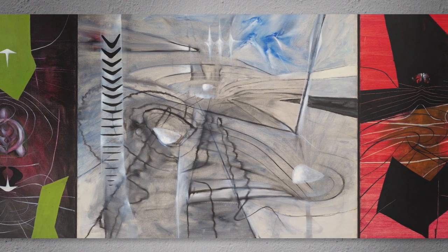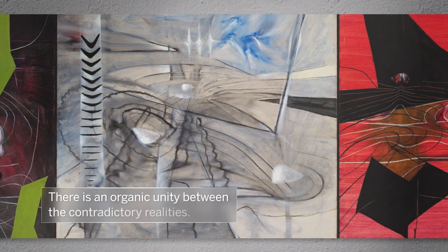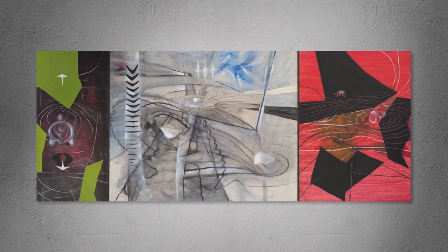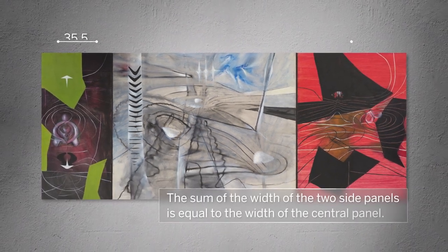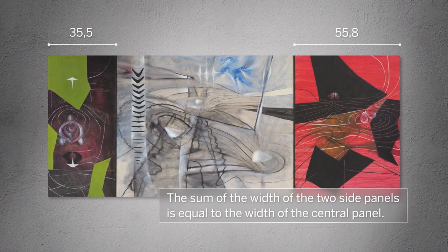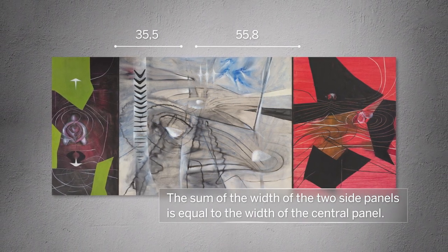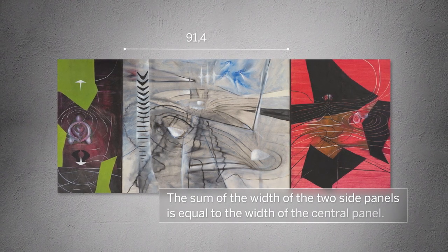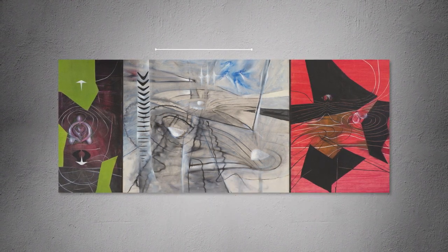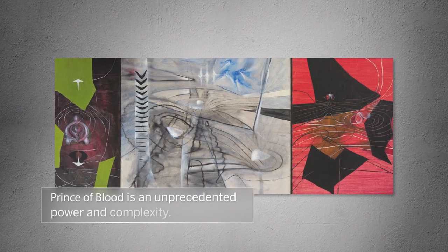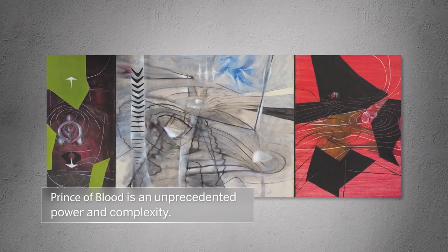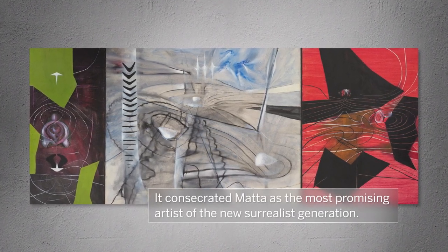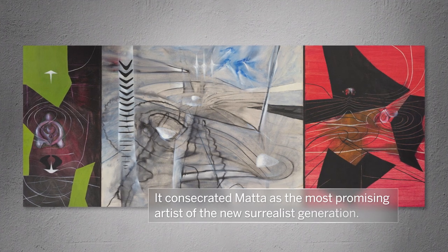Despite the inconsistency of the panels, there is an organic unity between the contradictory realities. The sum of the width of the two side panels is equal to the width of the central panel, reminding us that Matta uses precise scientific concepts to illustrate his pictorial forms. Prince of Blood is an electrifying work of unprecedented power and complexity that consecrated Matta as the most promising artist of the new surrealist generation.